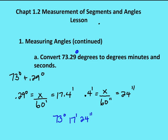Here I have an angle measure of 73.29 degrees and I want to convert it to degrees, minutes, and seconds. I know 73 degrees is just 73 degrees. What I need to figure out is what portion of a degree 0.29 is in minutes and seconds. I know one degree equals 60 minutes, so 0.29 degrees equals x over 60 minutes. I find that 0.29 degrees is equal to 17.4 minutes.